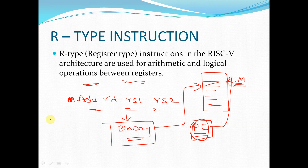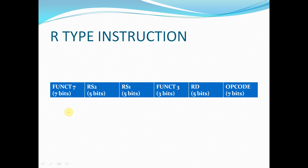Coming to R-type instructions — we have already seen the RISC-V architecture in our previous session, where we have a register file. In RISC-V architecture we have a total of 32 registers: each is 32-bit in the case of RV32I, and 64-bit in the case of RV64I.